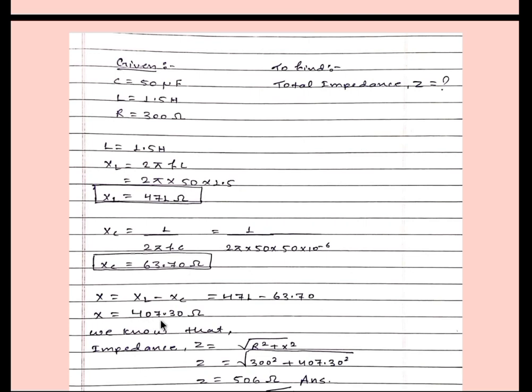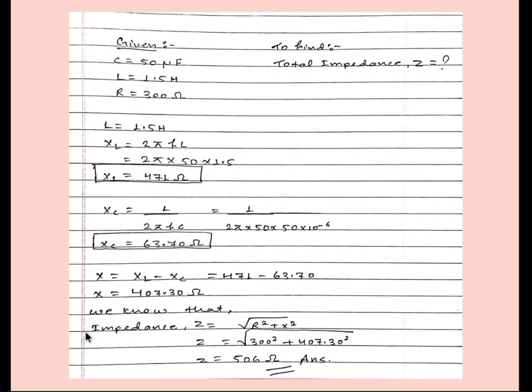So X will be 407.30 ohm. And for impedance, Z is equal to square root of R square plus X square. We have R and we have X. After putting these values we will get Z is equal to 506 ohm and it will be our answer.